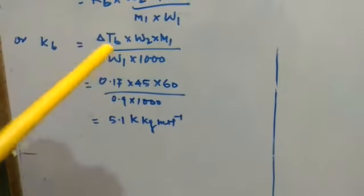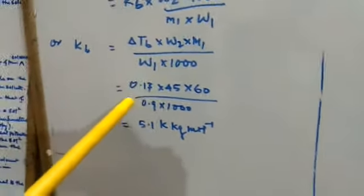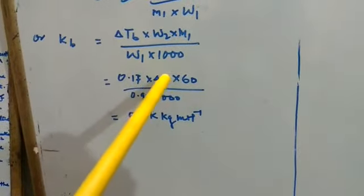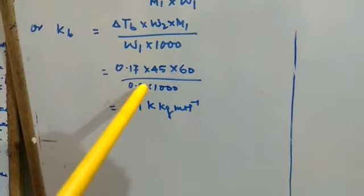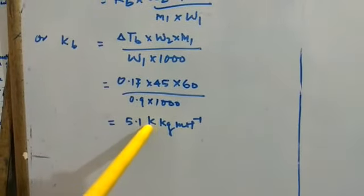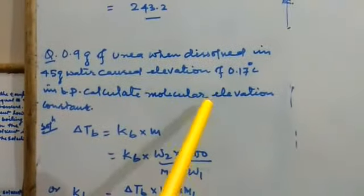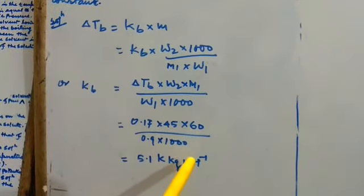Putting this value ΔTb, W2, M1 and M2, there will be 0.17 × 45 × 60 / (0.9 × 1000), and this will be equal to 5.1 Kelvin kg per mol. So, the Kb, the molar elevation constant, is 5.1 Kelvin kg per mol. Thank you.